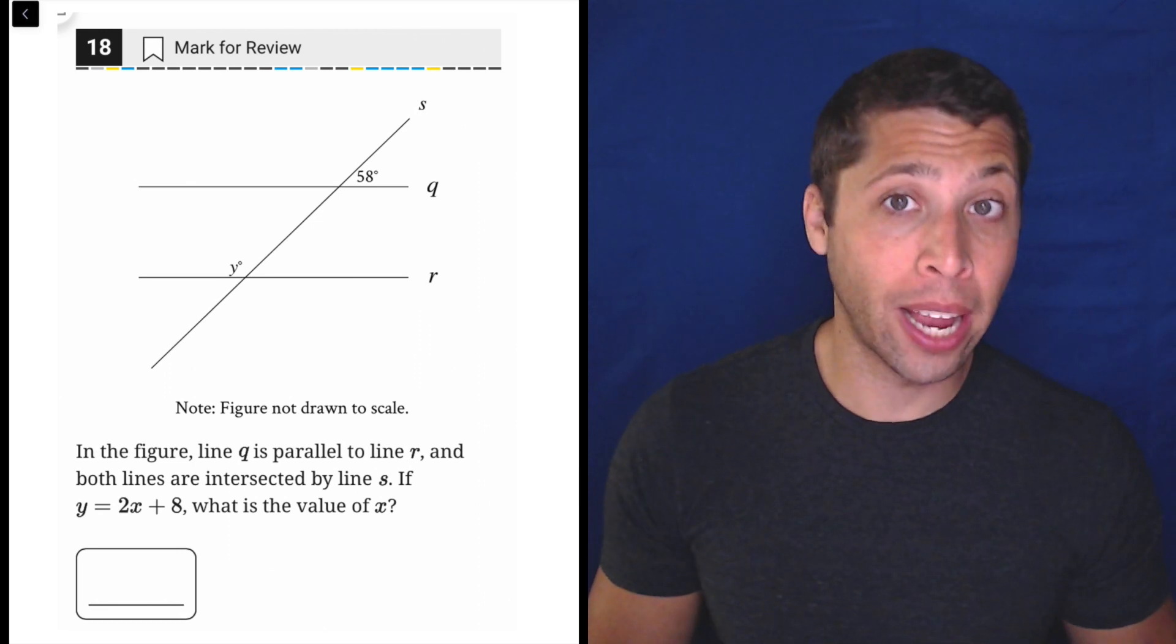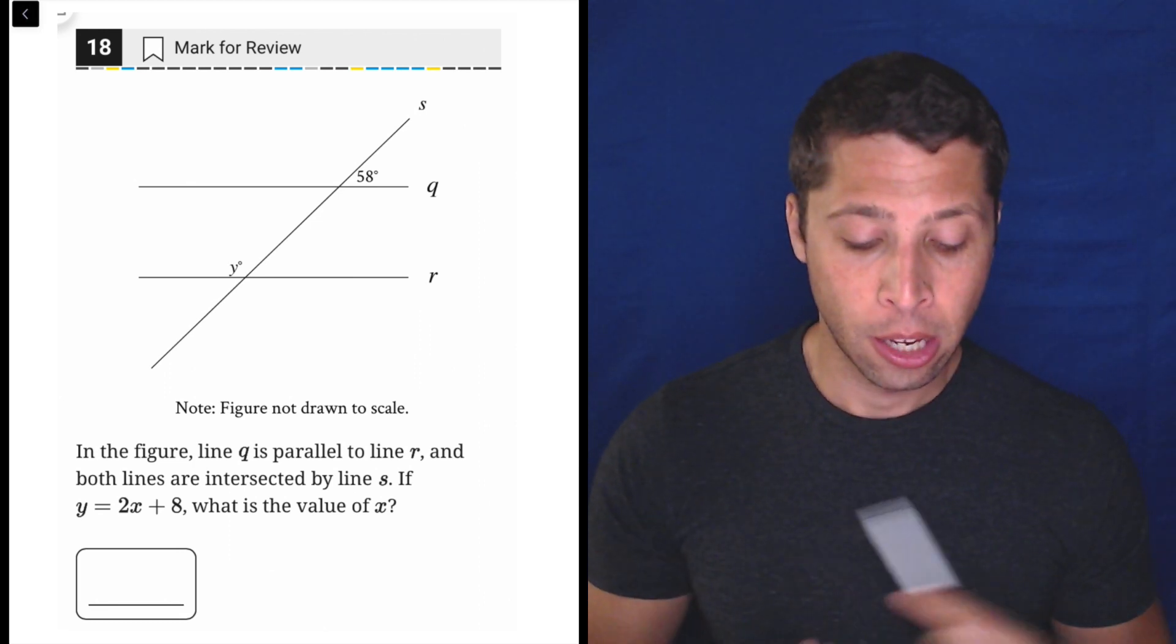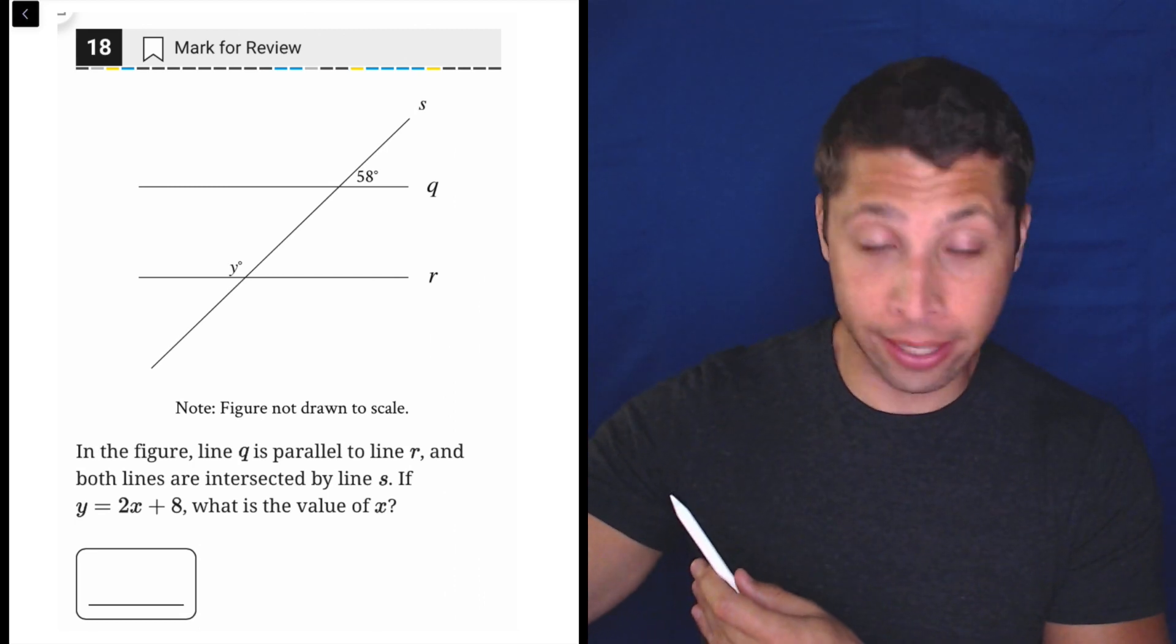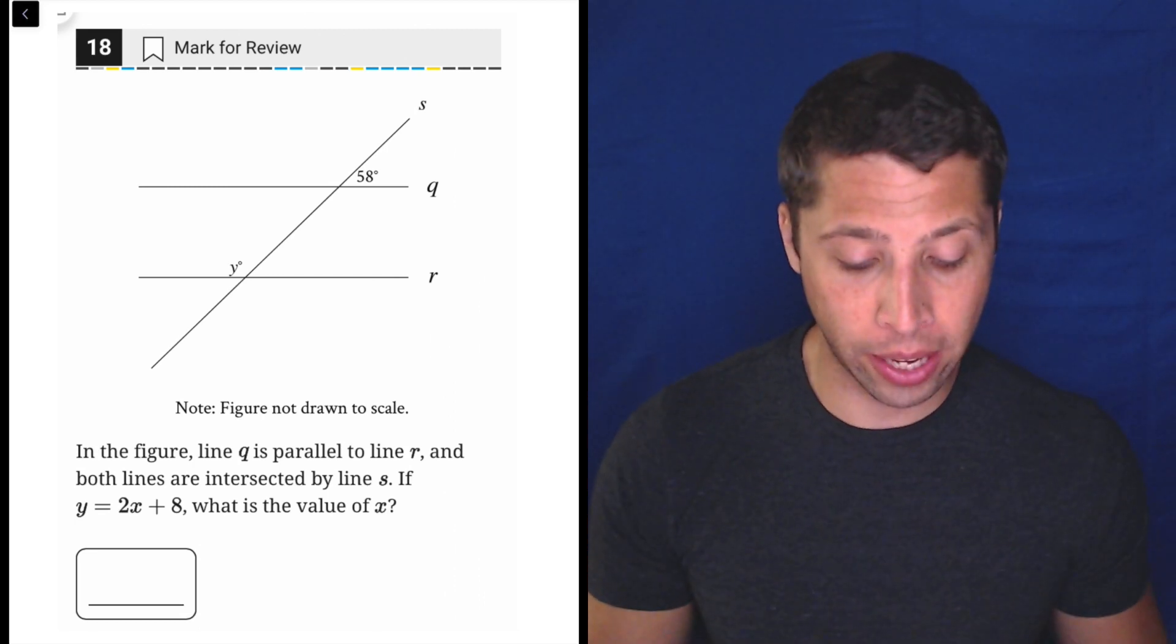Congruent angles are the same, supplementary angles add up to 180 degrees. So we're going to use both of those facts to move around this picture. Ultimately, we want to get to that y, so let's put things in place here.